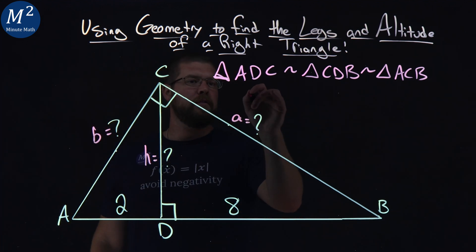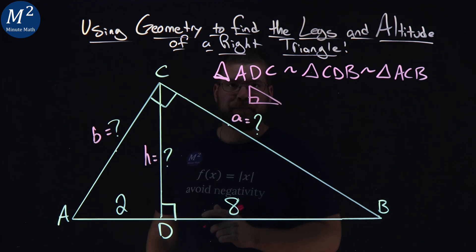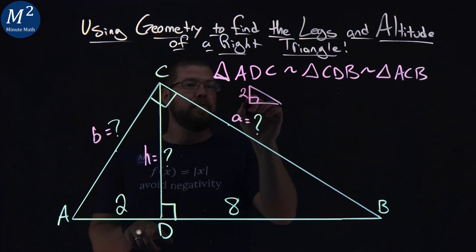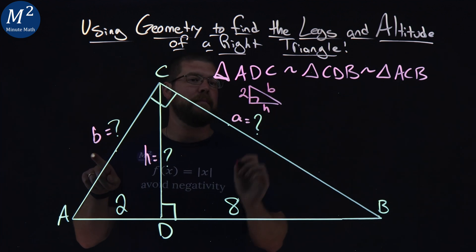So let's go draw these little triangles. We have a little right triangle here and put what we know. So we have ADC. Little leg is 2, big leg is h, and hypotenuse is b.